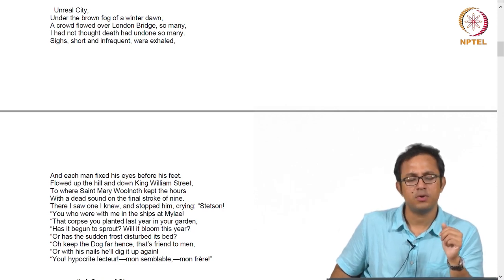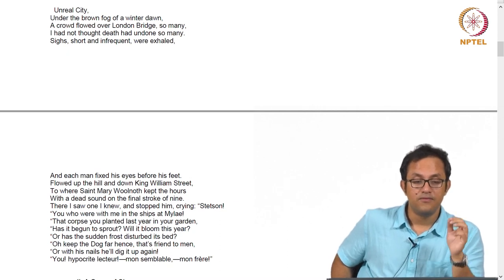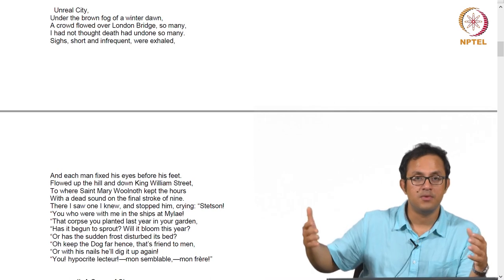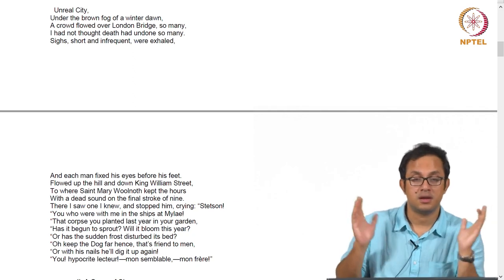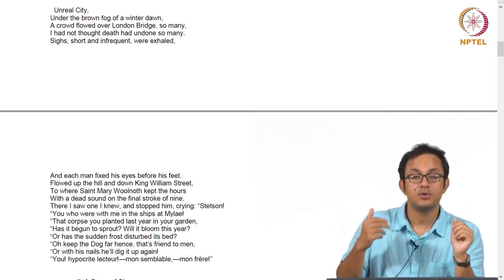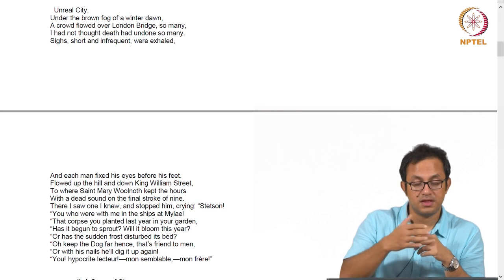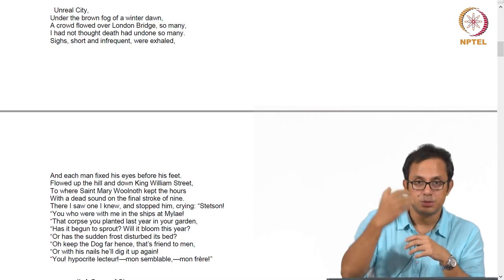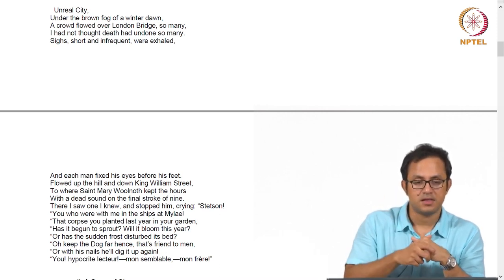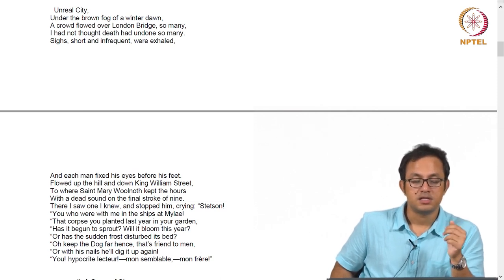Looking at the image that follows: 'Unreal City, under the brown fog of a winter dawn.' The winter dawn is producing a brown fog and everything looks very unreal and spectral in that kind of setting — almost hallucinatory, like hallucination in the morning where you cannot see through the hallucination. Everything is hallucinatory and that impairs your sight, your sense of looking, your cognitive understanding, which gets more and more interrupted by that fog created by the winter dawn. And then of course, the London Bridge is referred to. 'A crowd flowed over London Bridge, so many; I had not thought death had undone so many.'